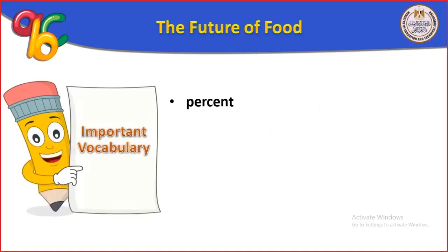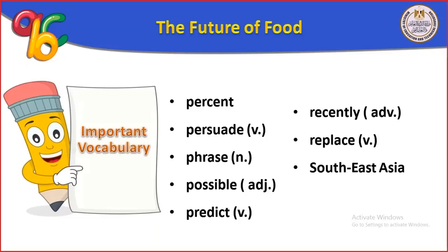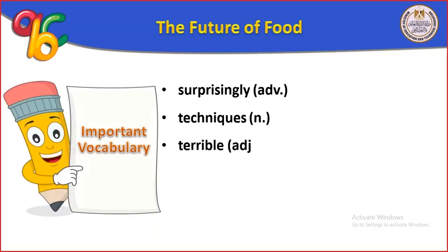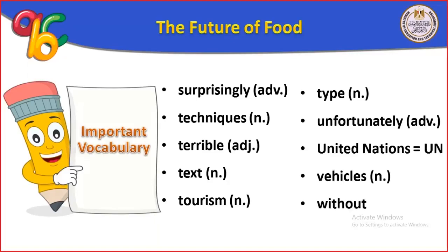Over (أعلى). Percent (بالمئة). Persuade (يقنع). Phrase is a noun. Possible (من المحتمل). Predict (يتنبأ). Recently (مؤخراً). Replace (يحل محل). Southeast Asia — الجزء الجنوب الشرقي من قارة أسيا. South Africa (أفريقيا الجنوبية). Techniques. Terrible (رائع). Text. Tourism (طائب). Unfortunately (لسوء الحظ). United Nations (الأمم المتحدة). Vehicles (مركبات). Without (بدون).